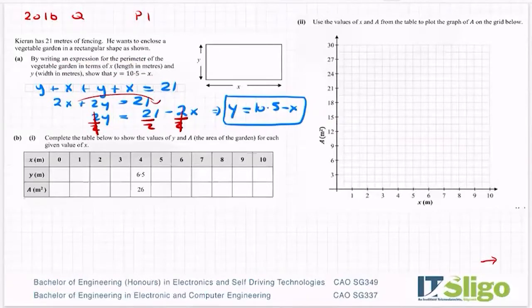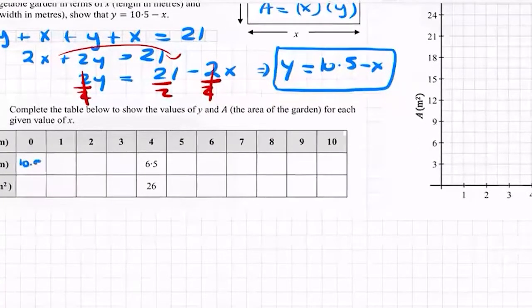Okay, part b: complete the table below to show the values of y and area of the garden for each x value. So area is always length by width, so for this garden it's x times y. My x values they've given me, and my y values are up here. So when x is zero, my y is going to be 10.5 minus zero, so it's 10.5.